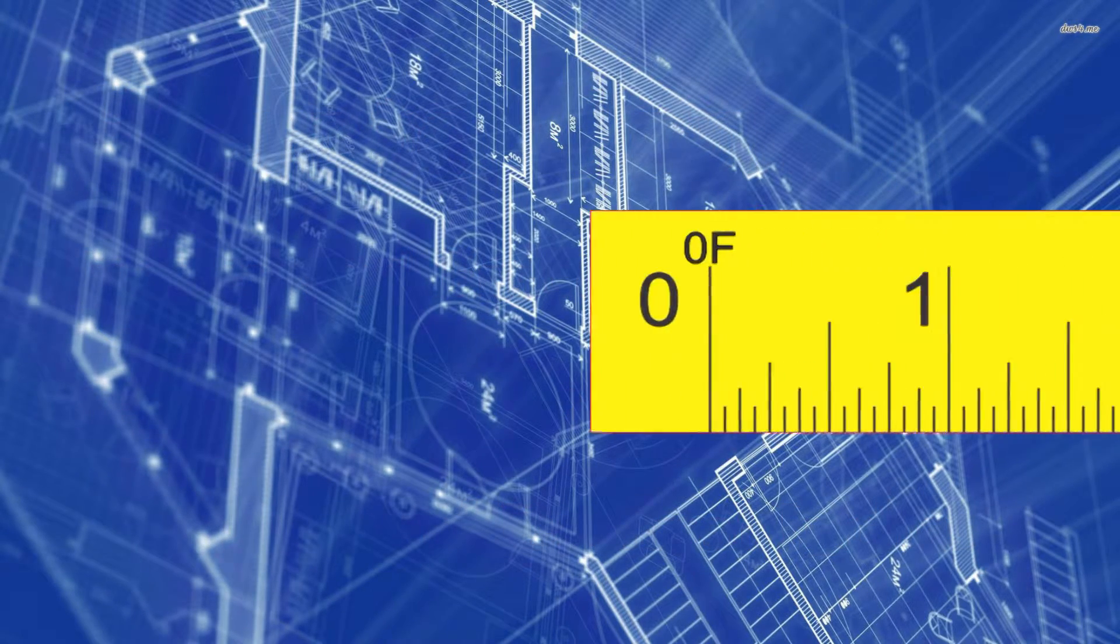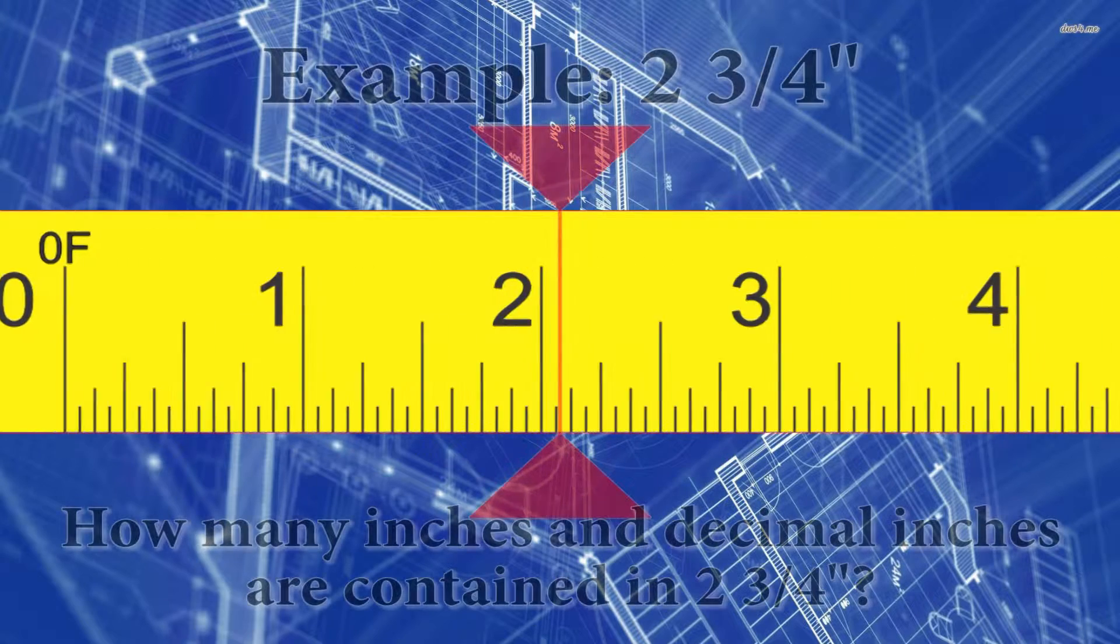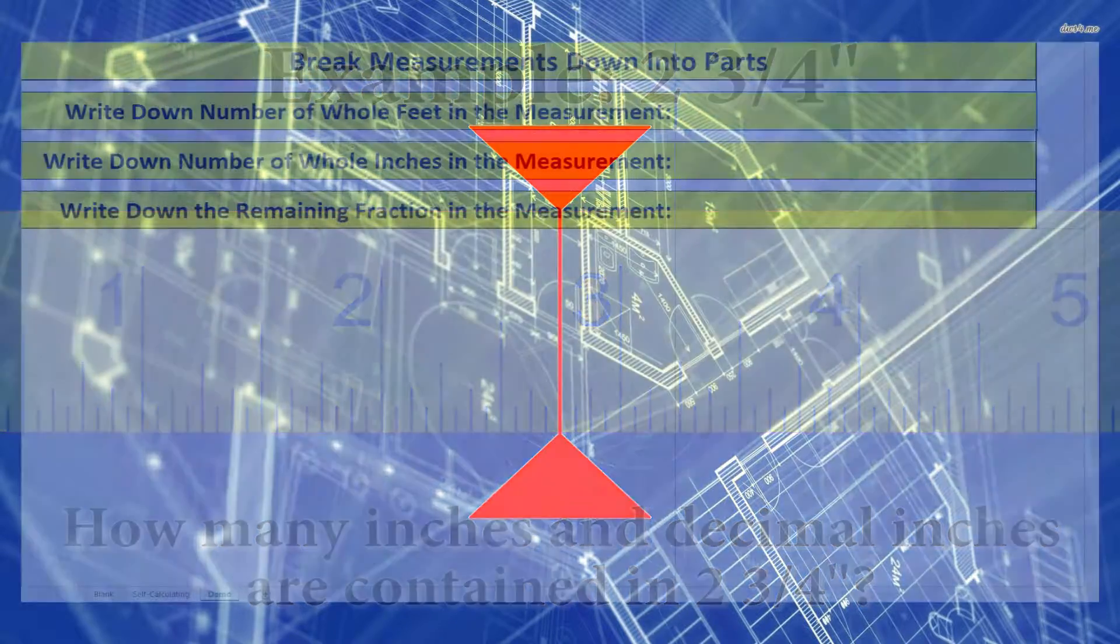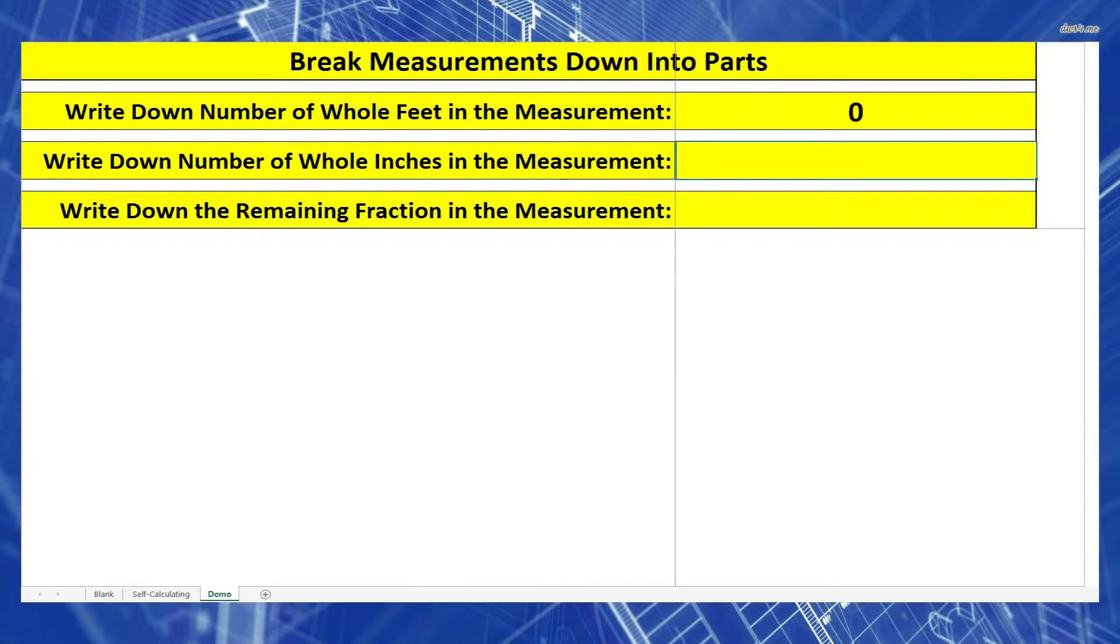Example one: two and three-quarter inches. Let's turn this into inches and decimal inches. First, let's start by separating out our two numbers on a piece of paper. I'm going to write down the whole inches in one area and the fractions of an inch in another area. We need to keep them separate because they're two different types of numbers.